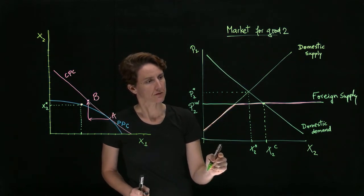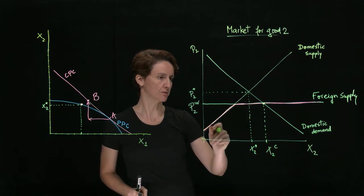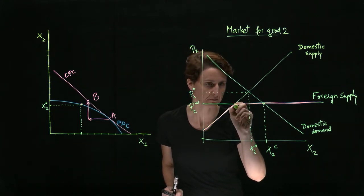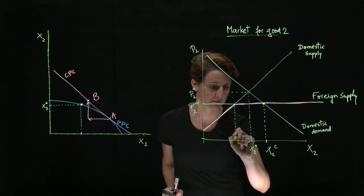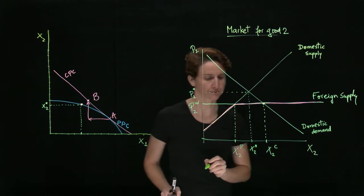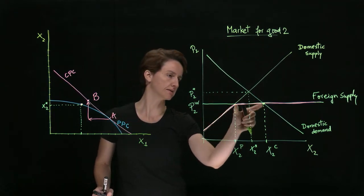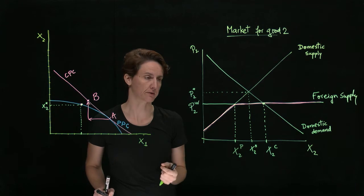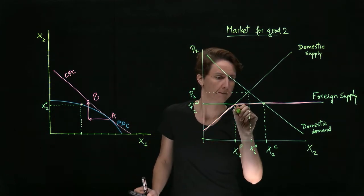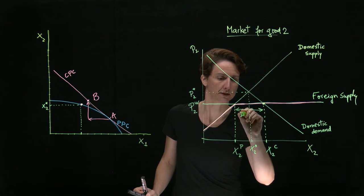The domestic producers will not be able to sell this many units. Next to production. And the difference will be furnished by foreign producers. So there will be imports.